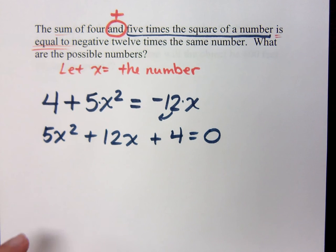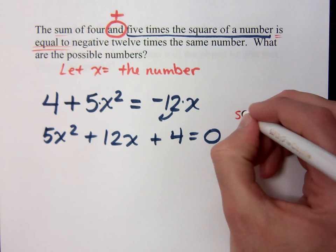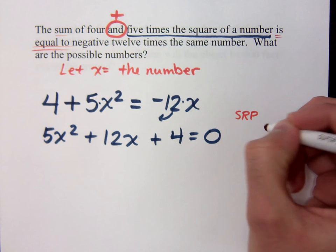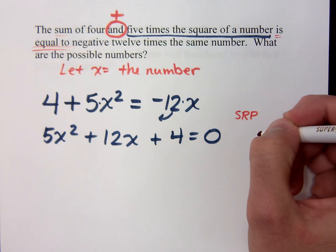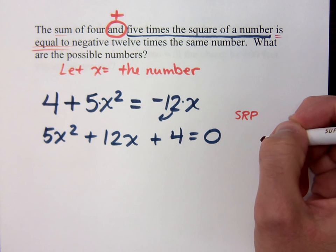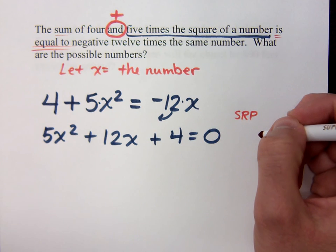We have a lot of different ways of trying to solve this equation. The first thing you want to look for is SRP, the square root property. Is this set up so that we can use the square root property? That means, do I have my variable contained inside of a square?